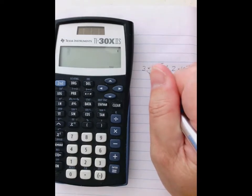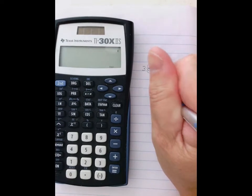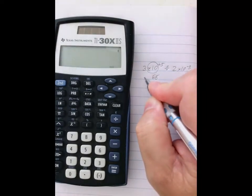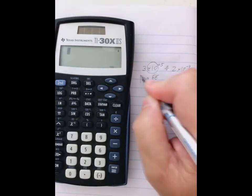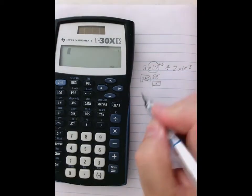All of this part here that says times 10 to the power of, that gets replaced by EE. But then because EE is above the key, the whole sequence is second EE above X inverse.